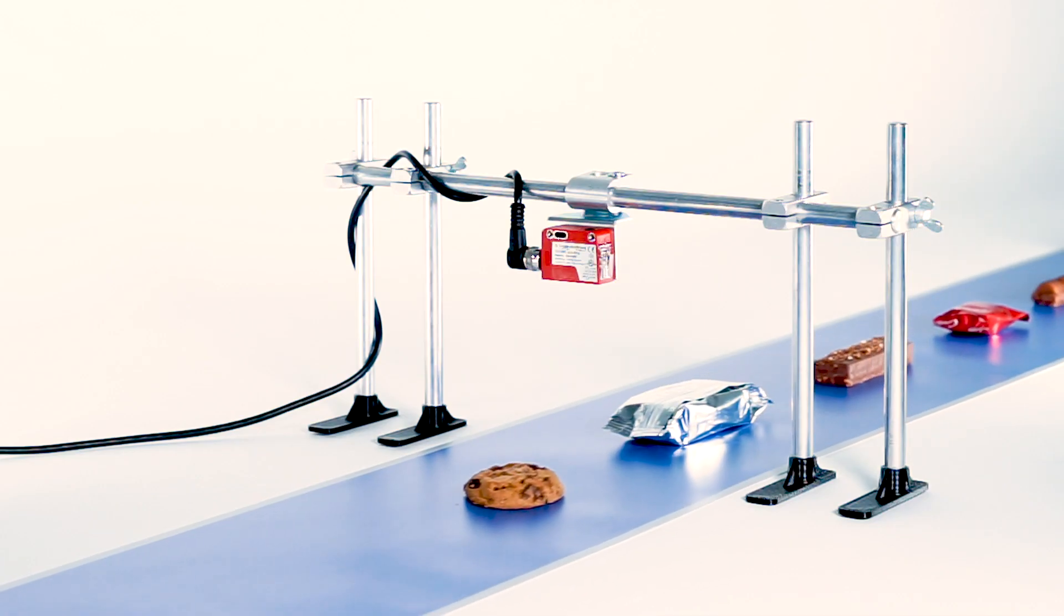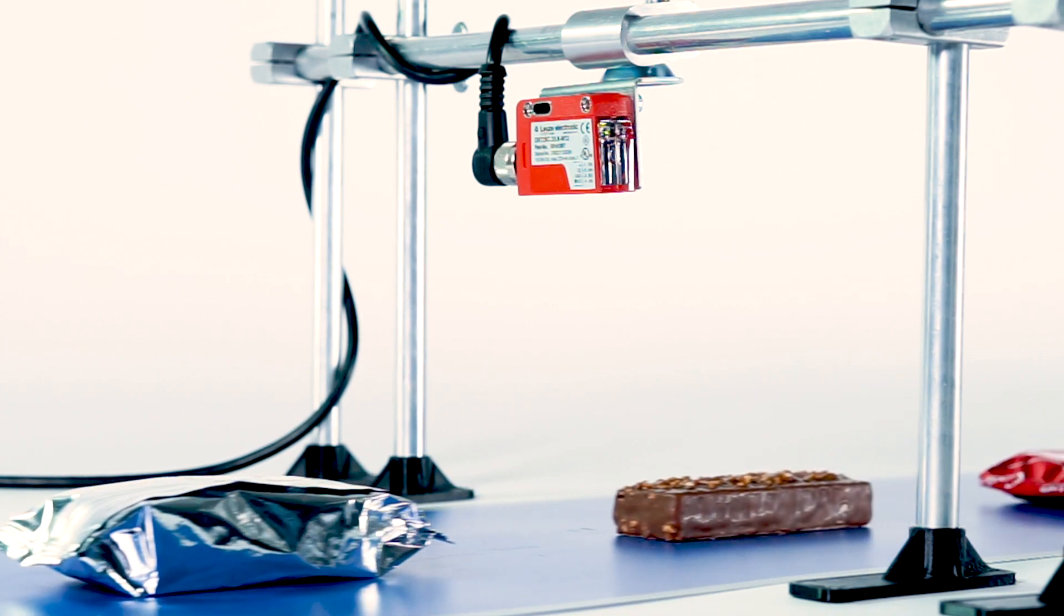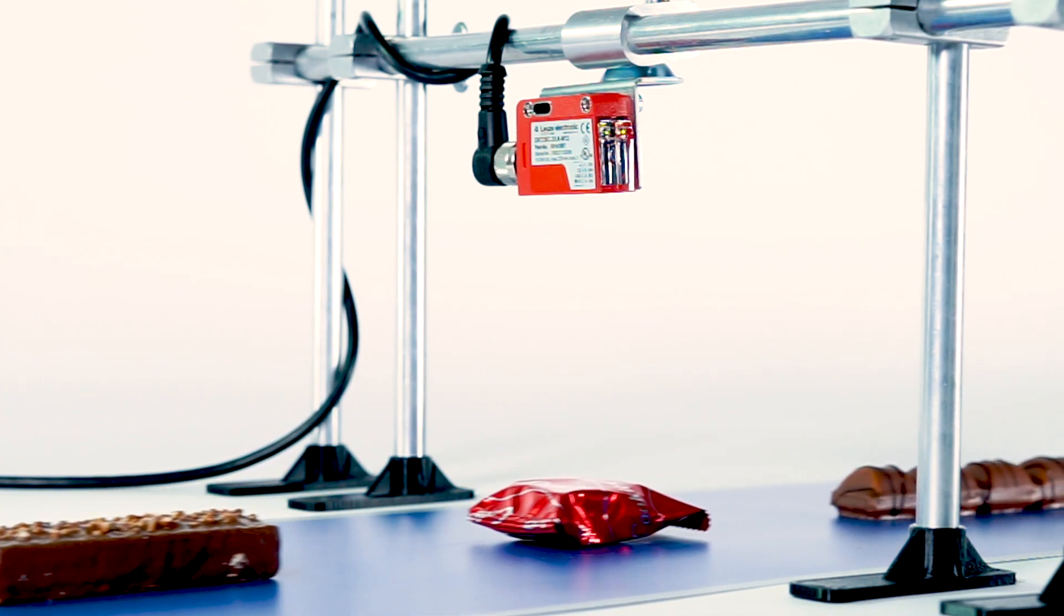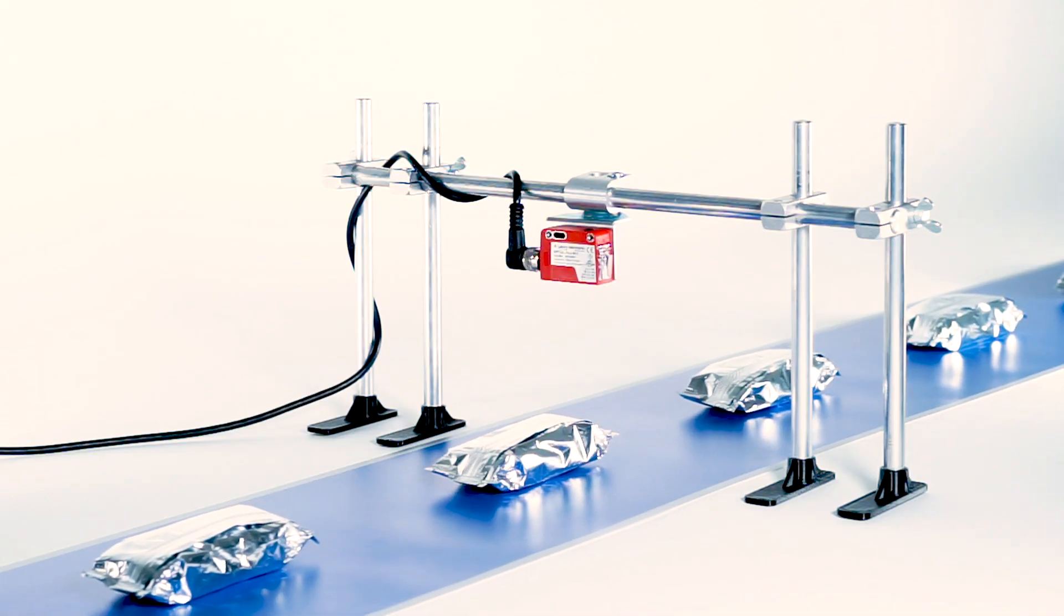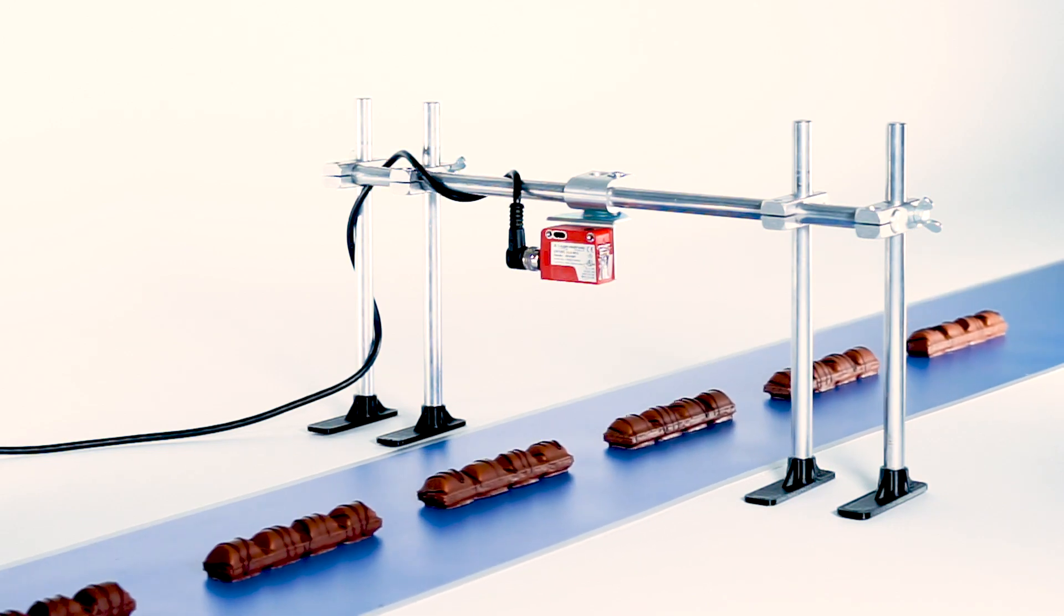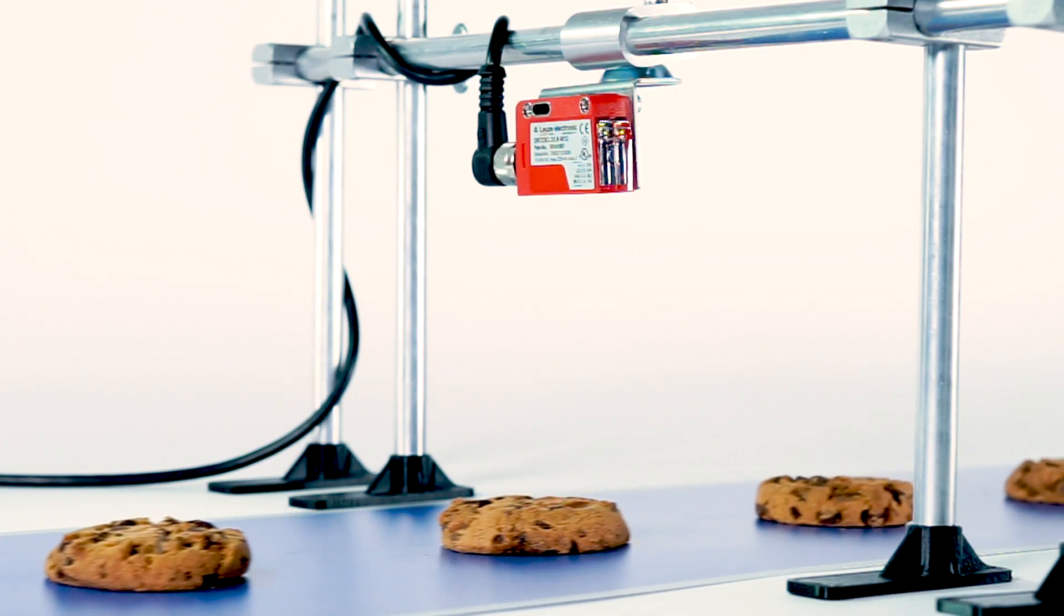From this point on, it reliably detects everything that lies on and is different from the belt, regardless of whether it is a bar of chocolate, a cookie, or a single praline.